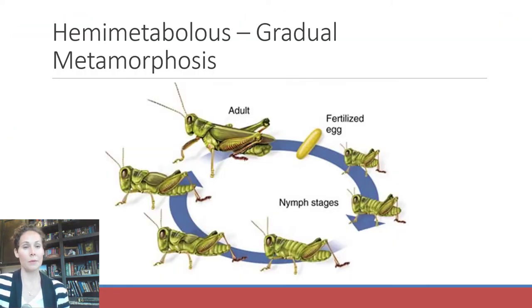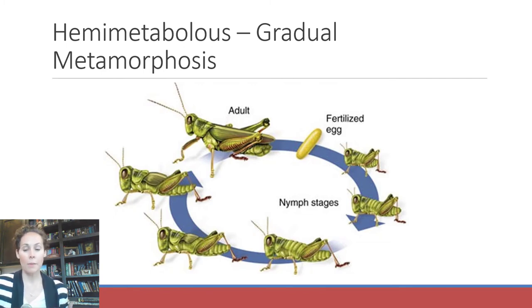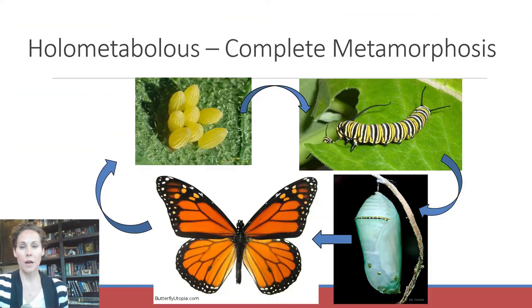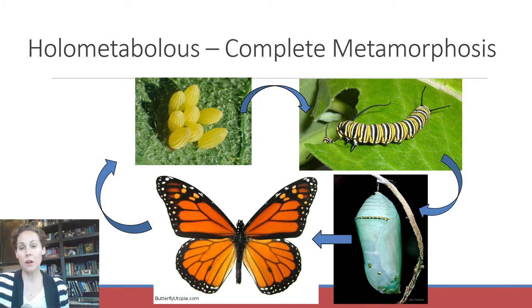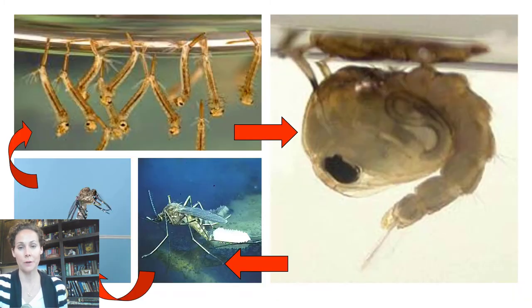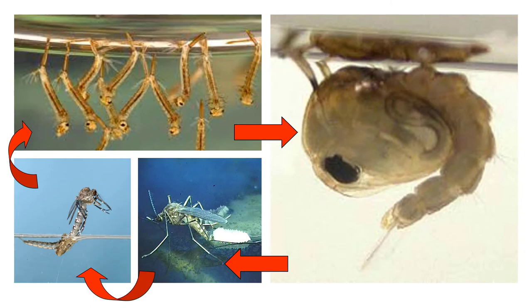Being holometabolous is a very beneficial way to be — these are more advanced insects. We know this because they're not competing with mom and dad for food. Think about the monarch butterfly: larvae and adults have totally different mouthparts and feed on completely different things. Larvae feed on milkweed plant material, whereas adults feed on nectar. Same with mosquitoes — larvae feed on things in the water, whereas adult females feed on blood. Completely different mouthparts, different hosts, different food sources, so there's no competition for food between parents and offspring.